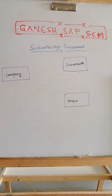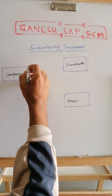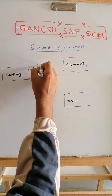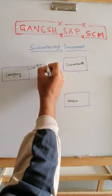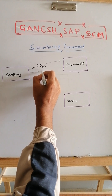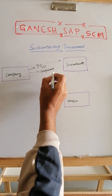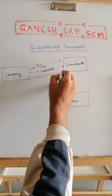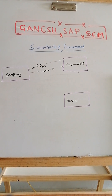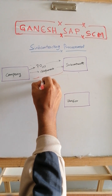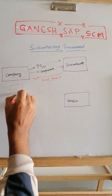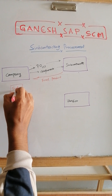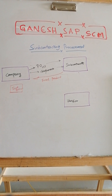In the normal subcontracting process, the company creates a subcontracting purchase order with item category L. The PO is issued to the subcontractor, and along with the PO, the company sends the components to the subcontractor. The subcontractor then uses those components to produce and send back the final product, which is received into the company's warehouse stock.